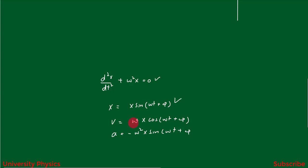For one periodic motion, if we place the value of this term, the displacement repeats its value after one oscillation, similarly the velocity repeats its value after one oscillation, and the acceleration repeats its value after one oscillation. This is something about periodic motion. In the next lecture we will define the Fourier series. Thank you.